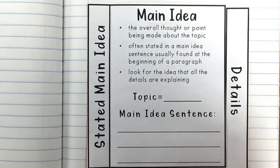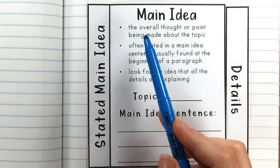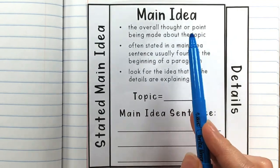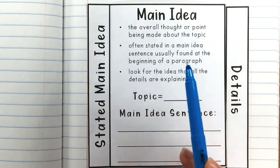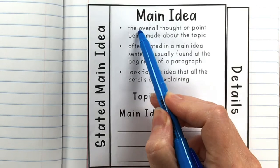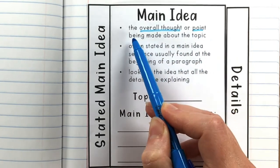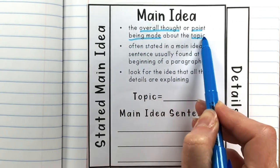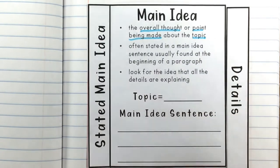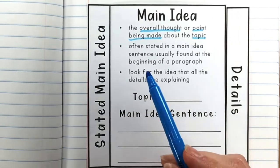Let's dive in and talk about main idea. Main idea is the overall thought or point being made about the topic. The author is trying to tell us something when we're reading, and this overall thought or point about the topic is the main idea — that's the reason the author wrote this paragraph or passage. So that's what we want to focus on.